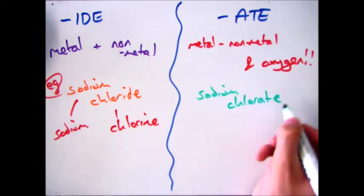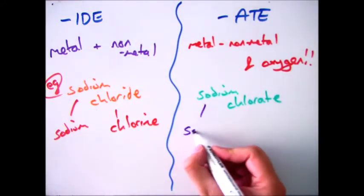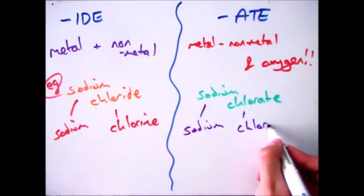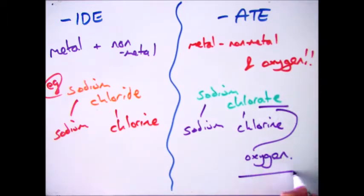If we have a look at sodium chlorate, we have sodium which is our metal, chlorine which is our nonmetal, and then oxygen which gives us our -ate ending.